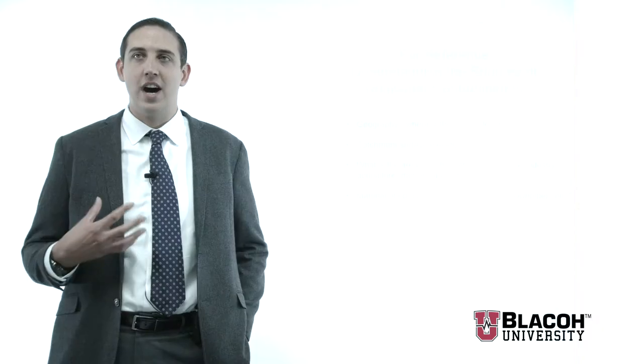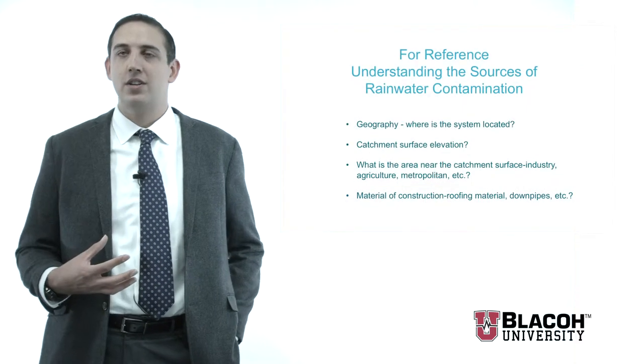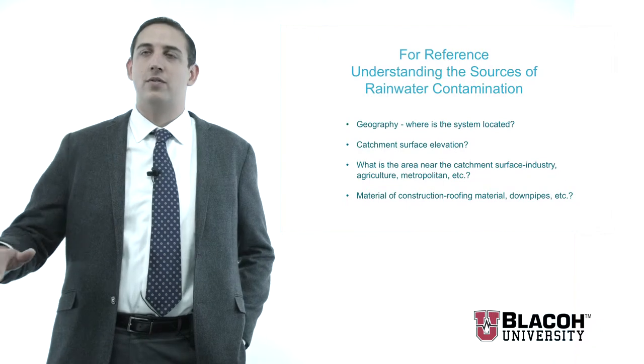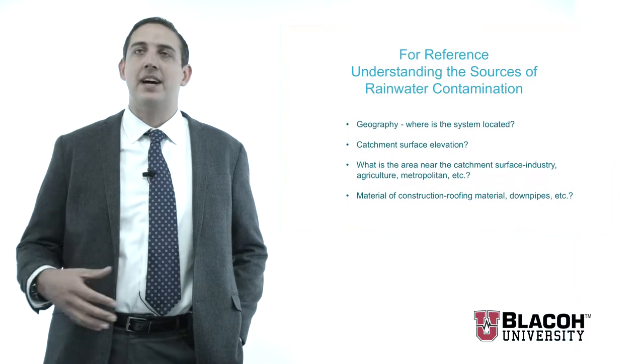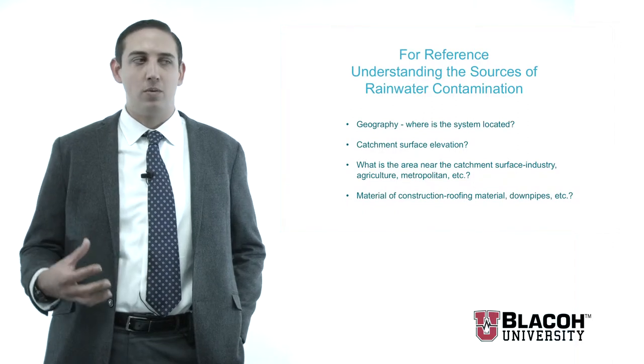When looking at a rain or stormwater system there are four different requirements which are utilized to determine the perceived level of contamination which can be found in these systems. First, geography — where the system is located. Second, catchment surface elevation — whether the stormwater was on the ground, first floor, all the way up to the 30th floor, which has a direct impact on the amount of water and the contamination of the water.